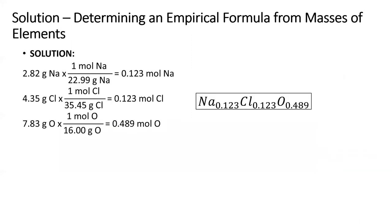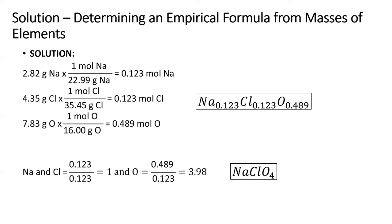To solve this problem, first convert the mass of each element into moles of that element. The smallest number in this formula is 0.123. If we divide all the values in the formula by 0.123, we get the empirical formula NaClO4.